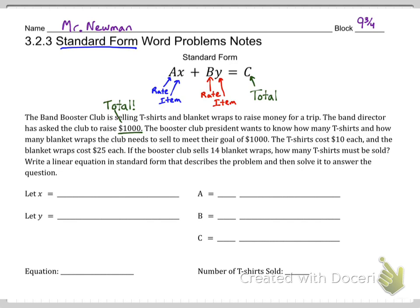Let's get started on this. The Band Booster Club is selling t-shirts and blanket wraps to raise money for a trip. The band director has asked the club to raise one thousand dollars. That looks like a total to me, so that's going to be our total. That's C. The Booster Club president wants to know how many t-shirts and how many blanket wraps the club needs to meet their goal of one thousand. The t-shirts cost ten dollars each. Notice the word each, so that's a rate. And the blanket wraps cost twenty-five dollars each. So we have t-shirts and blanket wraps. If the Booster Club sells fourteen blanket wraps, how many t-shirts must be sold? Before we get to the question, which I'm going to underline purple there,